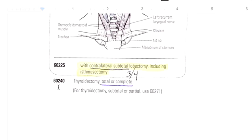And then your 60240 is a thyroidectomy total or complete. So the whole butterfly is gone.